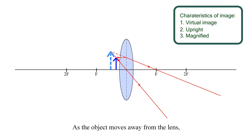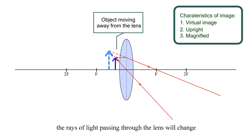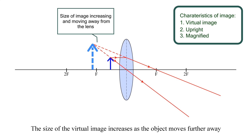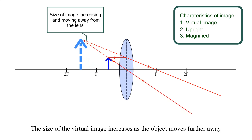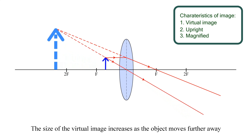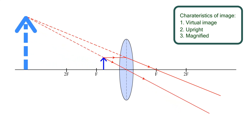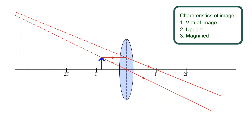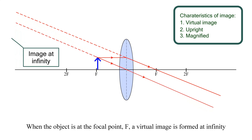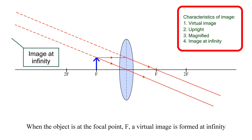As the object moves away from the lens, the rays of light passing through the lens will change. The size of the virtual image increases as the object moves further away. When the object is at the focal point, F, a virtual image is formed at infinity.